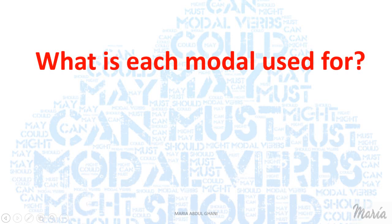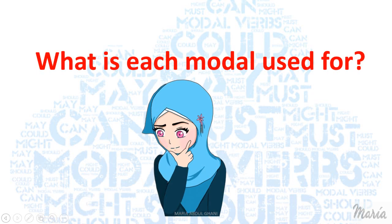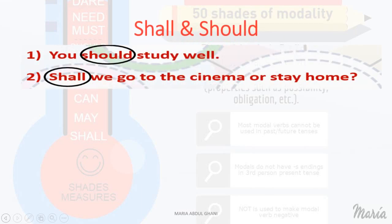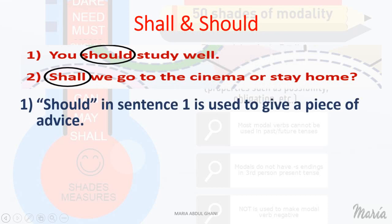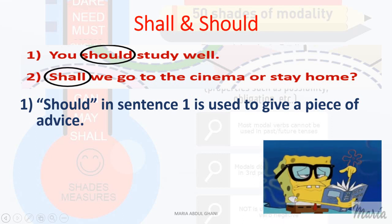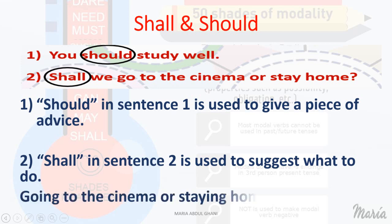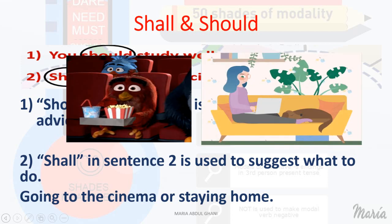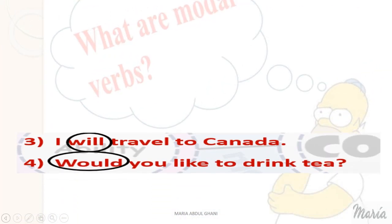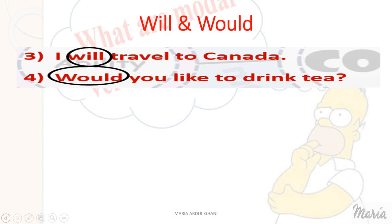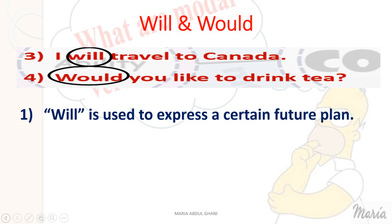What is each modal used for? Shall and should: Should in sentence one is used to give a piece of advice. Shall in sentence two is used to suggest what to do — going to the cinema or staying home. Will and would: Will is used to express a certain future plan.